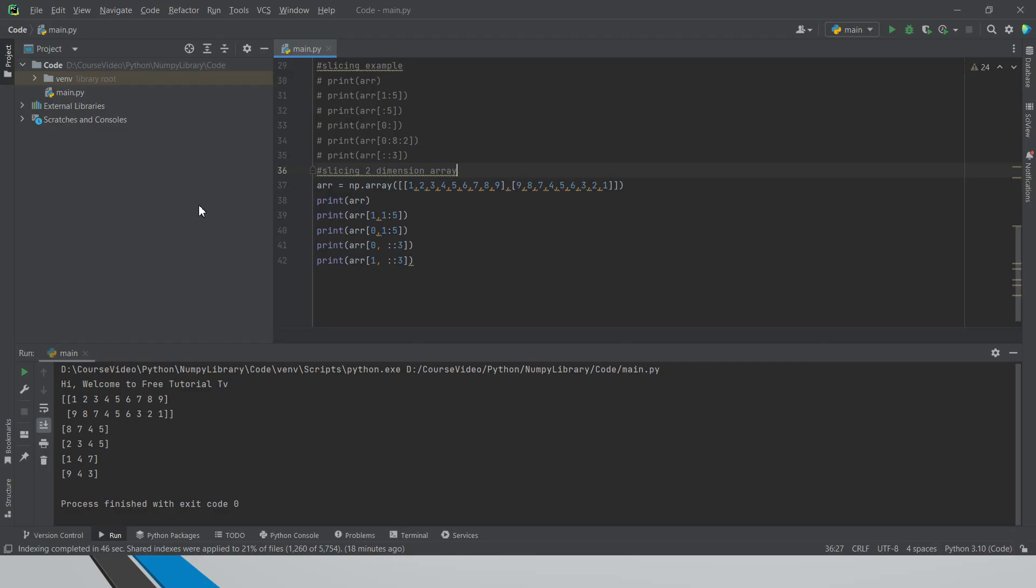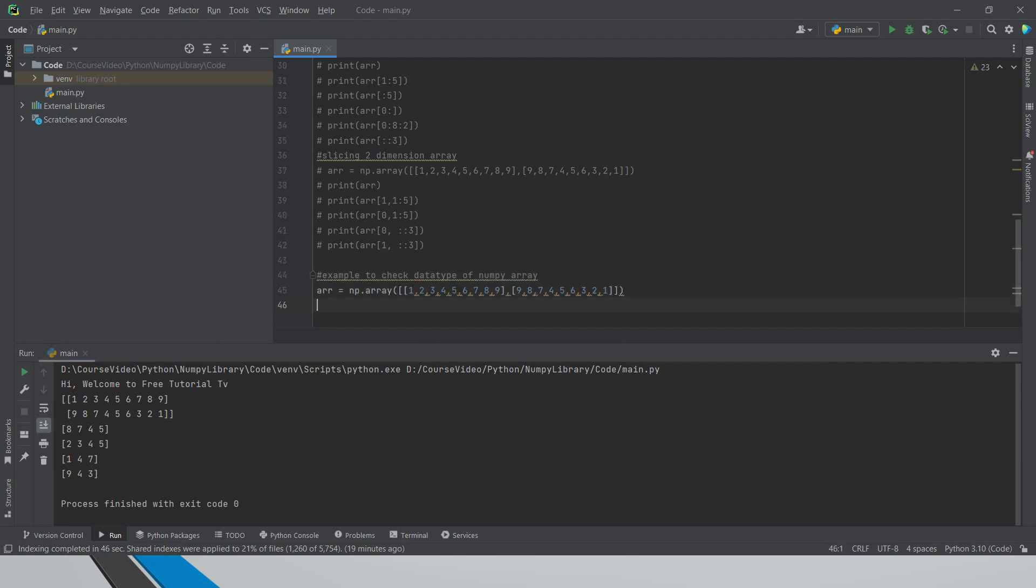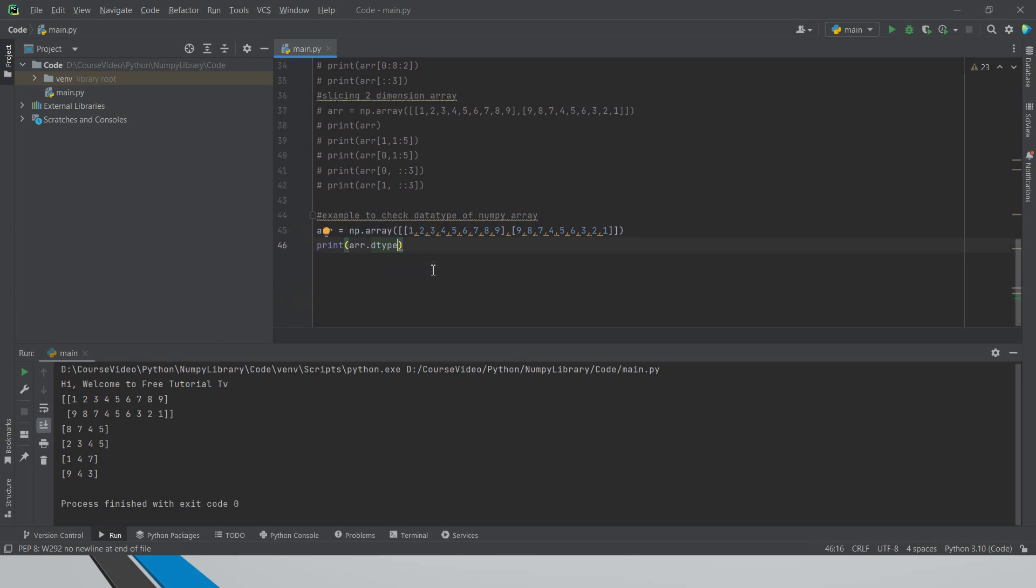So before going to this, I was having an example to show you about writing an example to check data types of NumPy array. Now if I do something like this and then say print array.dtypes. So you can also have initial while typing. Now if I click here, it says int32, it's a 32 integer. Okay, that's no issue.